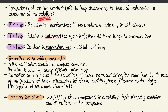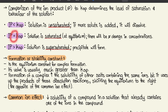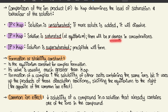Comparing the ion product (IP) to Ksp determines saturation level. If IP < Ksp, the solution is unsaturated and added solid will dissolve. If IP = Ksp, the solution is saturated and at equilibrium with no concentration change. If IP > Ksp, the solution is supersaturated and a precipitate will likely form.